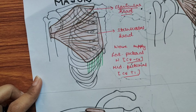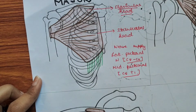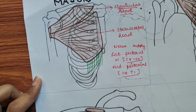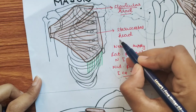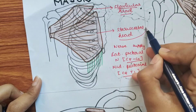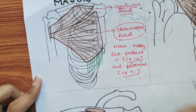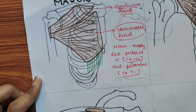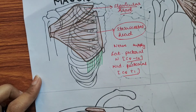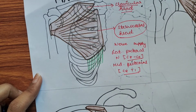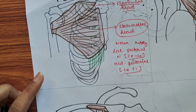In applied anatomy, sometimes a part of pectoralis major — mostly the sternocostal part — may be absent, leading to weakness in adduction and medial rotation of the arm. That covers all the key aspects of pectoralis major.